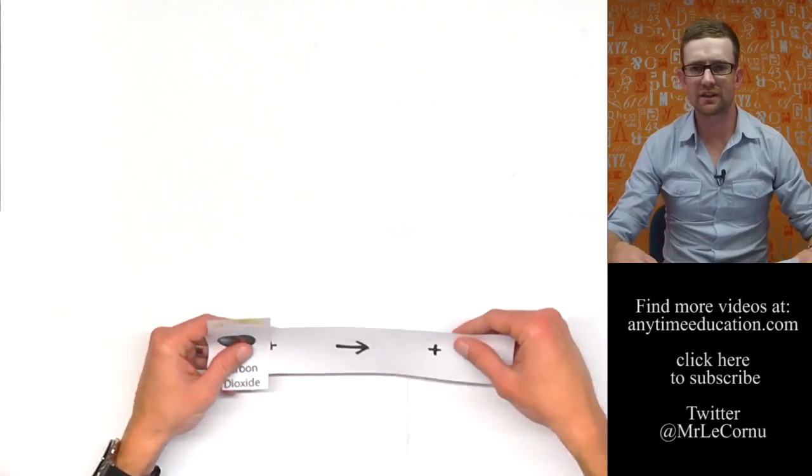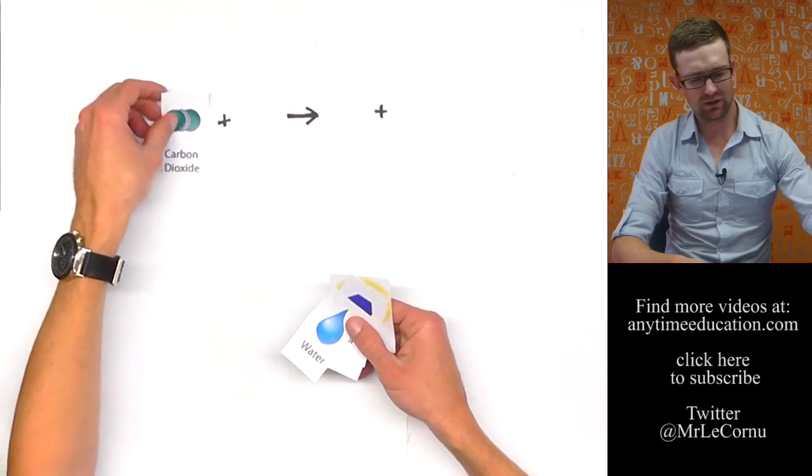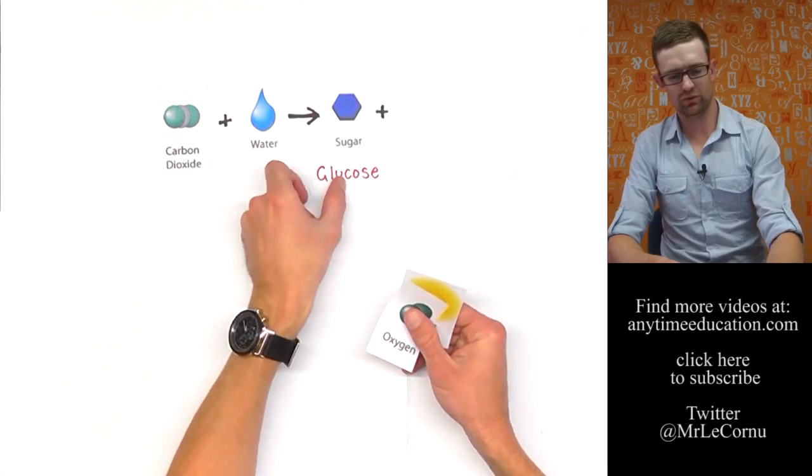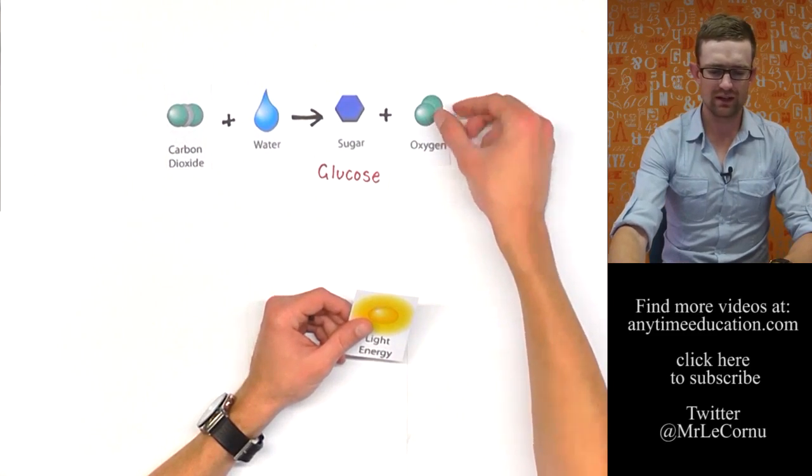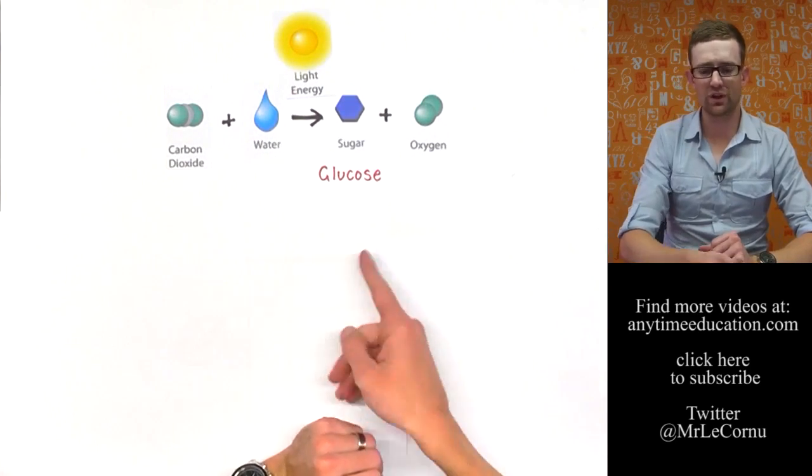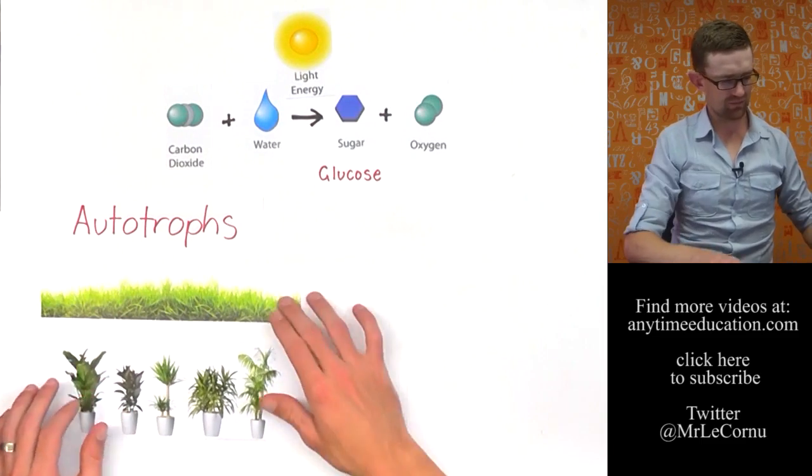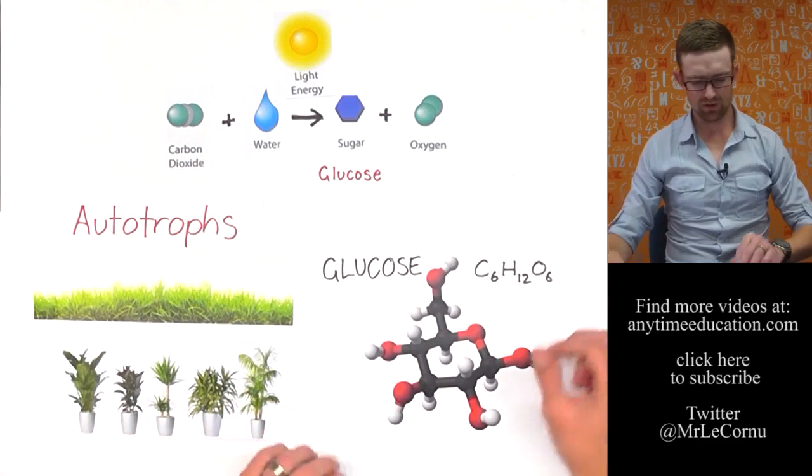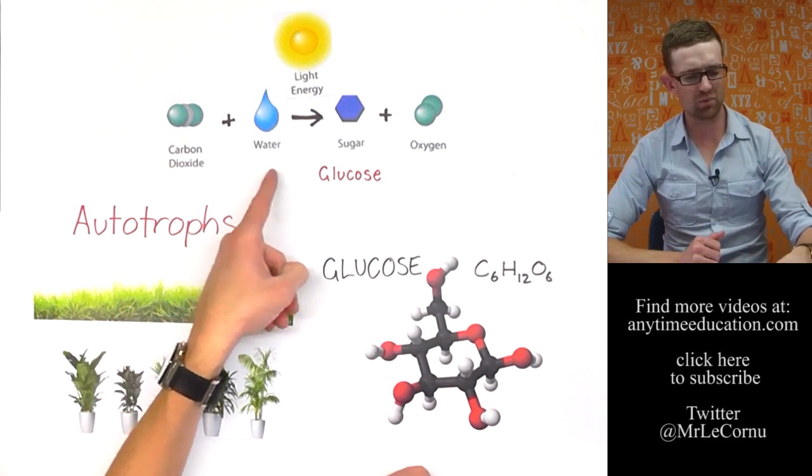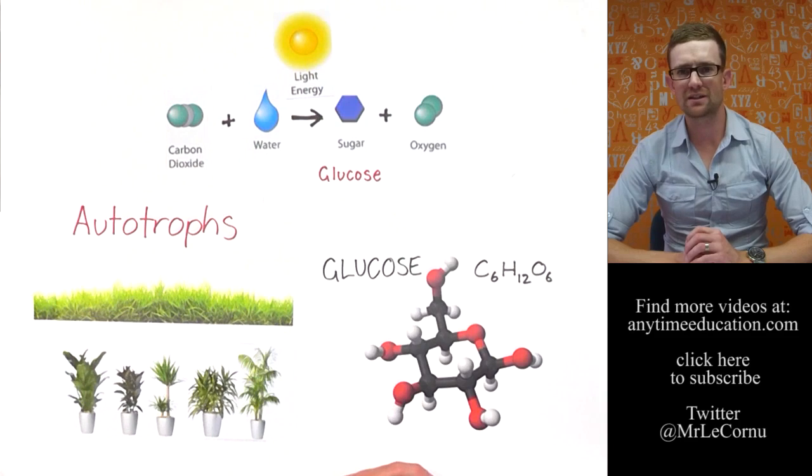In the photosynthesis video, we looked at how autotrophs make glucose. They make it using carbon dioxide and water, and they produce sugar, which is the glucose, and oxygen. To do that, they use light energy, which usually comes from sunlight. This process of photosynthesis and producing glucose is carried out by autotrophs. Common examples of autotrophs are plants. The special thing about autotrophs is that they're able to make glucose themselves from simple inorganic substances like carbon dioxide and water.